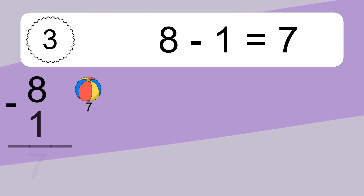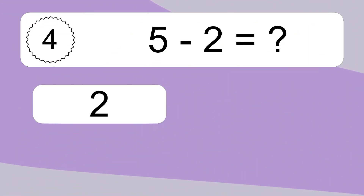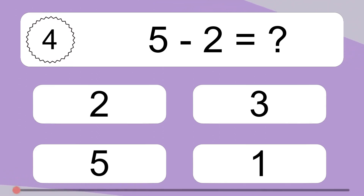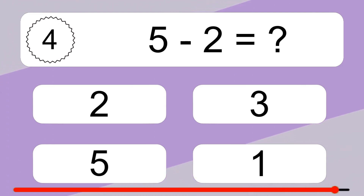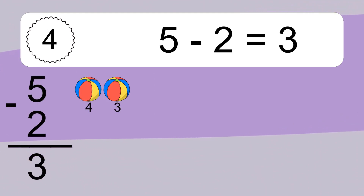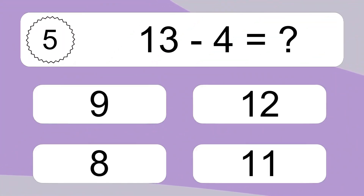Eight minus one equals seven. Let's count it: seven. Five minus two equals what? Five minus two equals three. Let's count it: four, three.